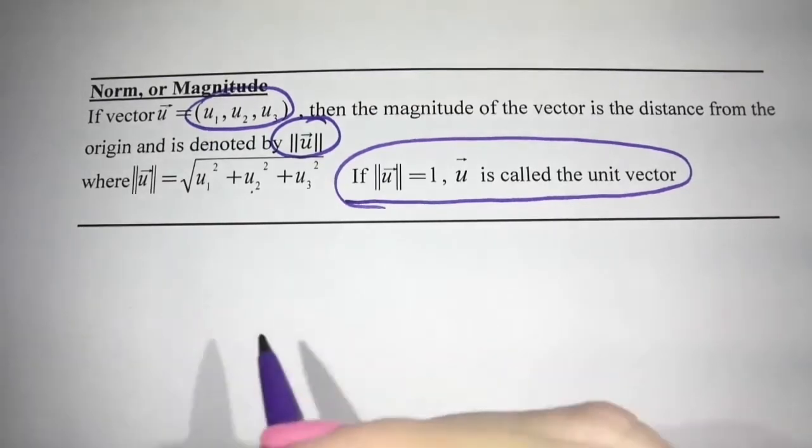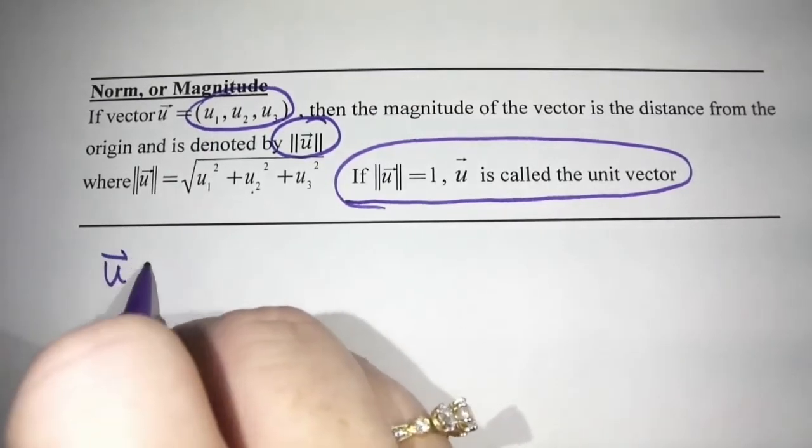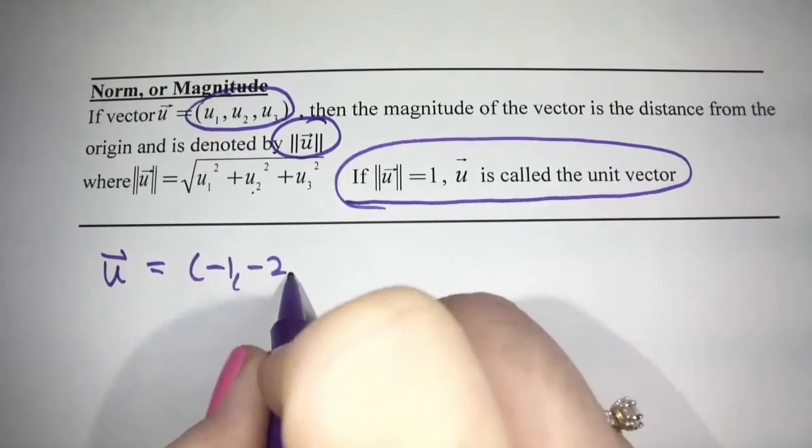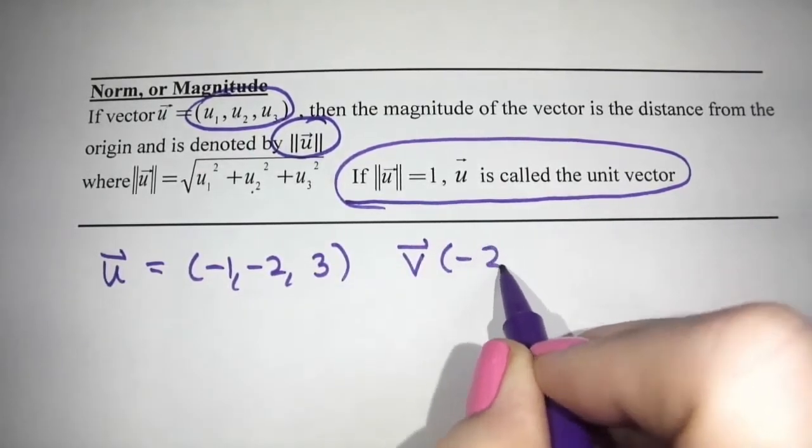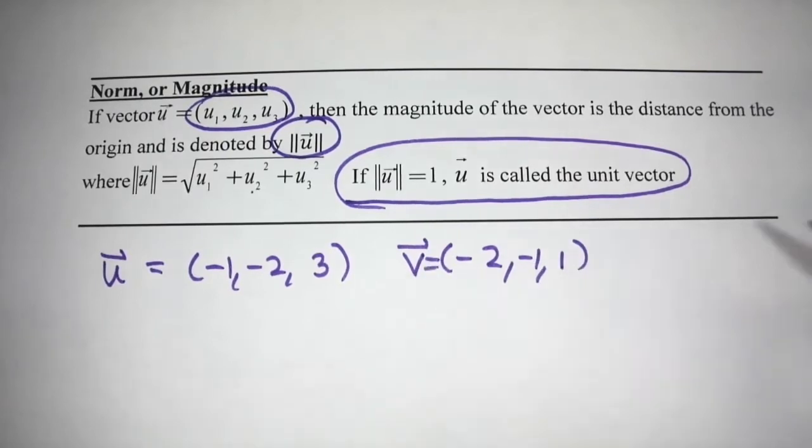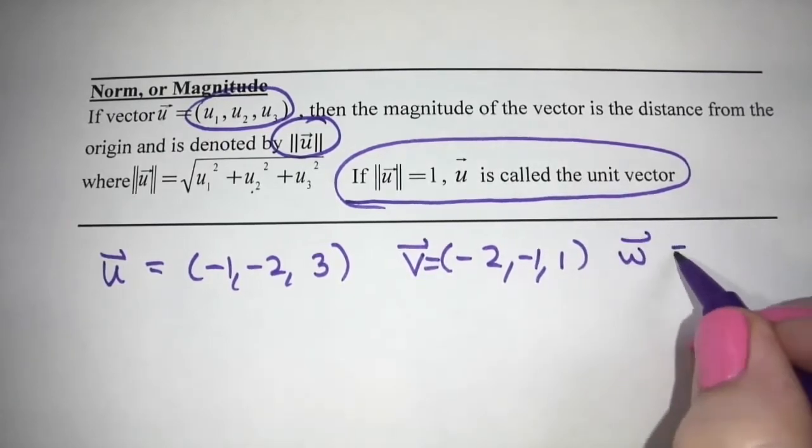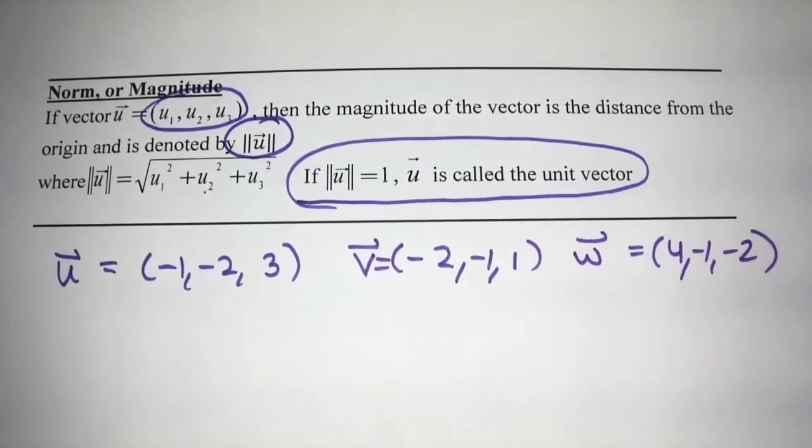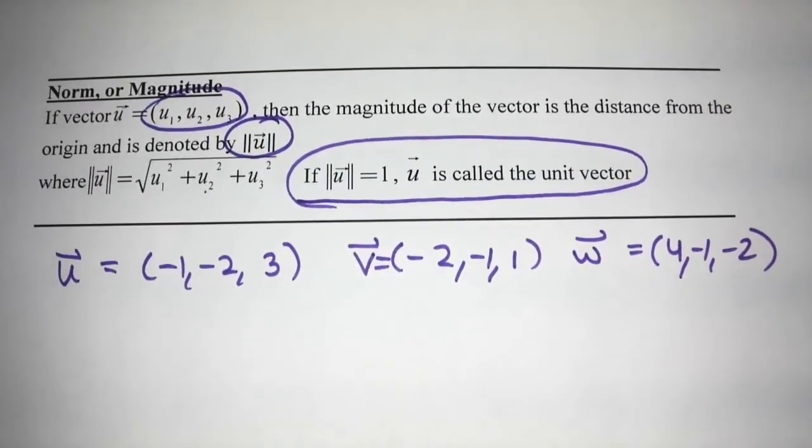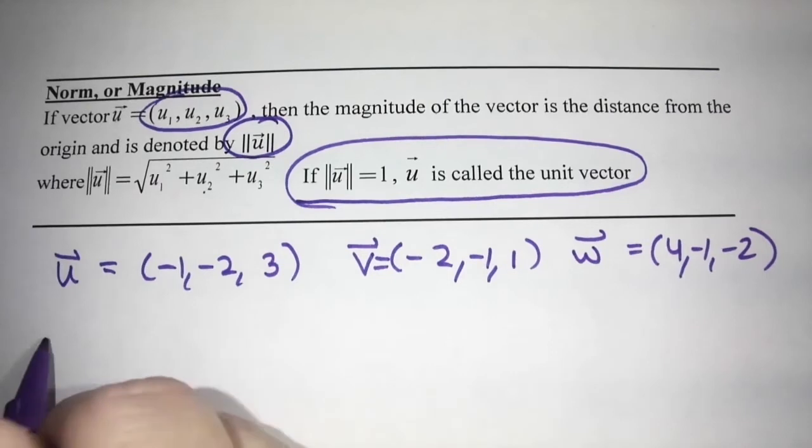Okay, so let's give you an example here. We've got our vectors from before. So U is (-1, -2, 3). V is (-2, -1, 1). And W is (4, -1, -2).